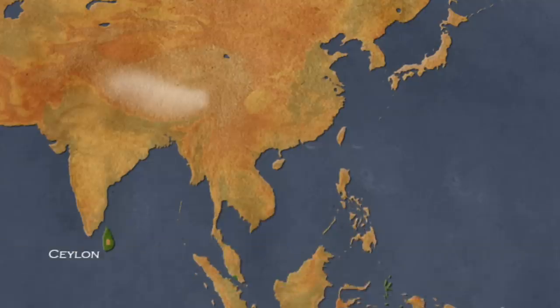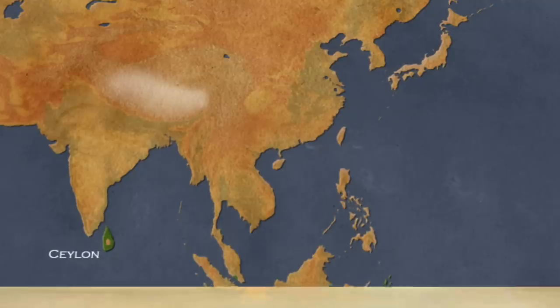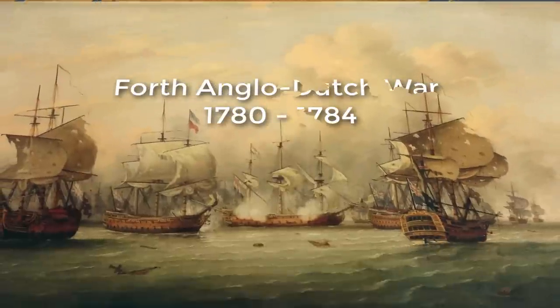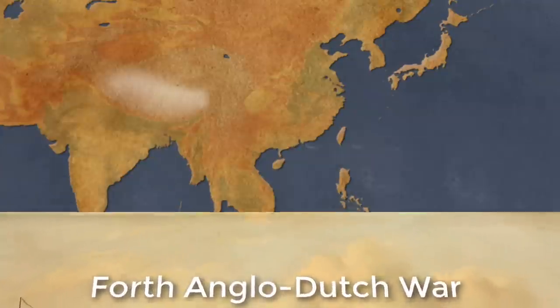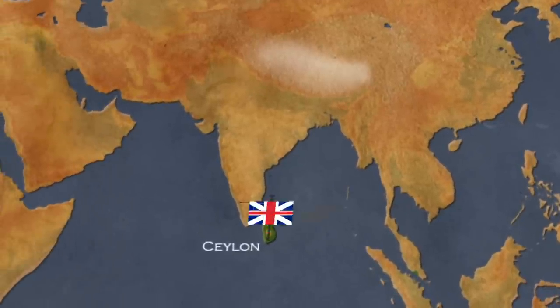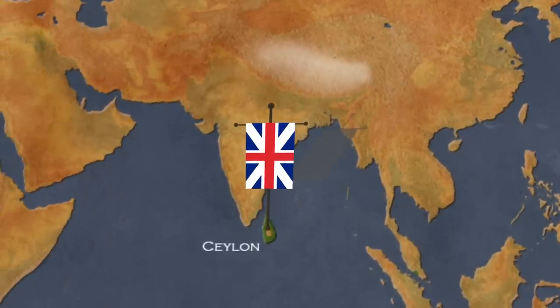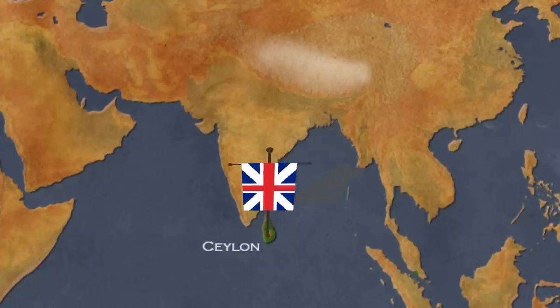During the American Revolutionary War, Britain declared war on the Netherlands — the fourth Anglo-Dutch war — in which Britain seized the Dutch colony of Ceylon. Under the Peace of Paris in 1783, Ceylon was returned to the Netherlands.